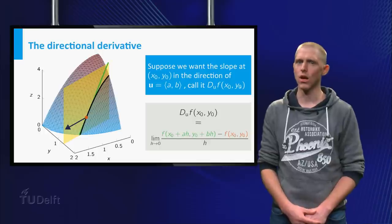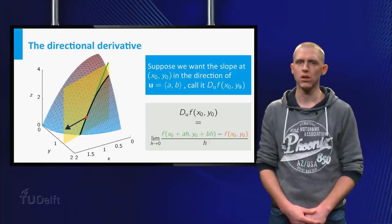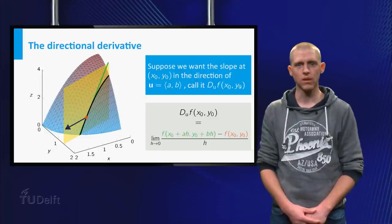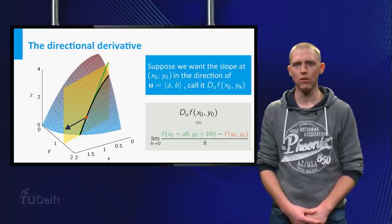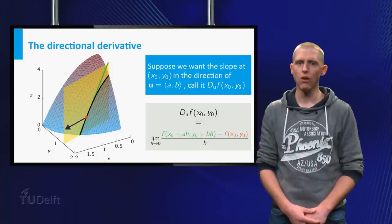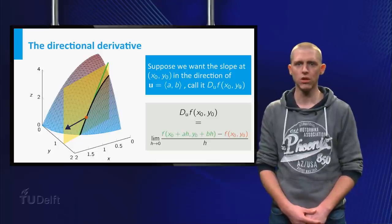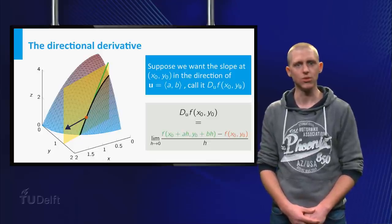You are however allowed to take the limit as h approaches 0, similar to the definition of the partial derivatives. You have now obtained the formula for the directional derivative of a function z is equal to f of x and y at a point x0, y0 in the direction of a unit vector u equal to ab.